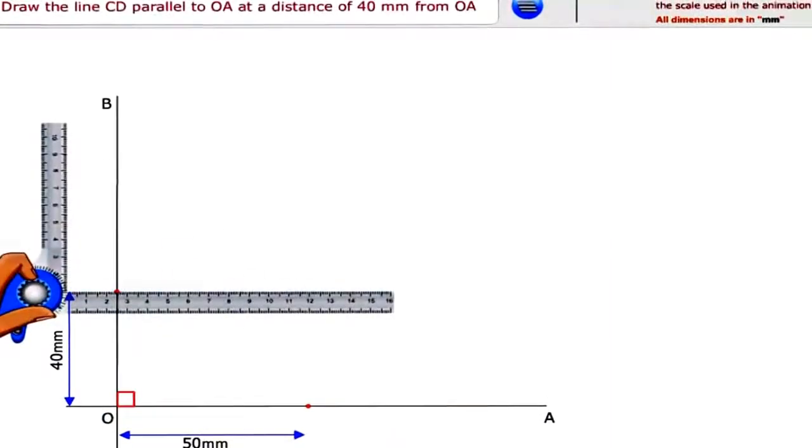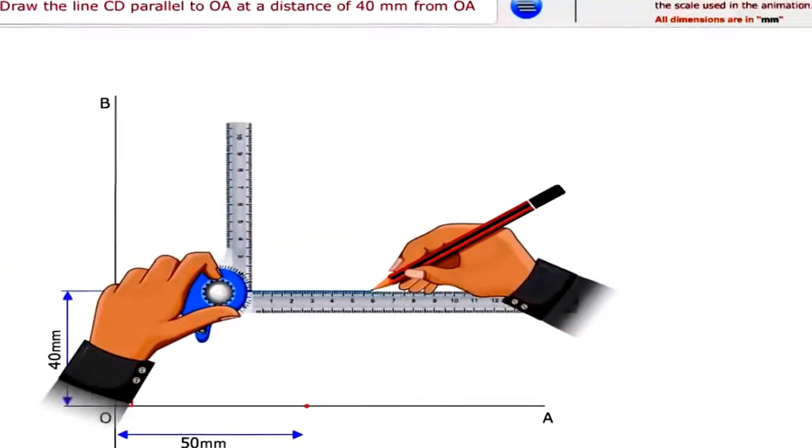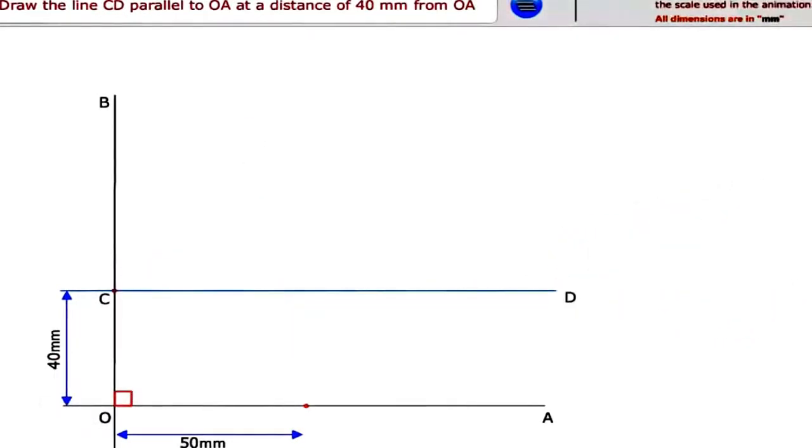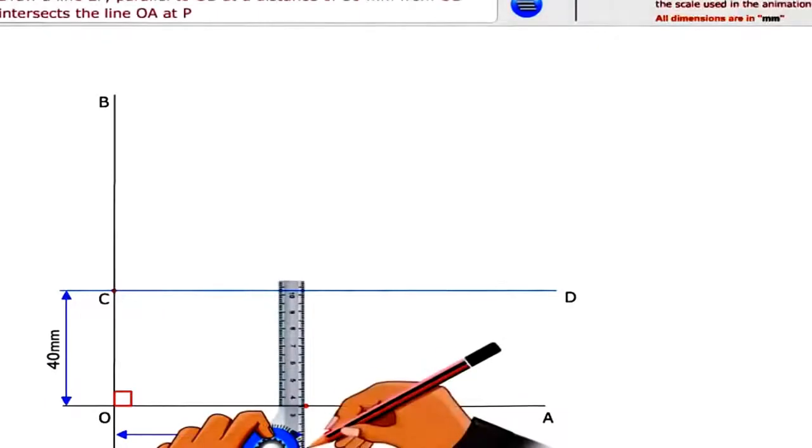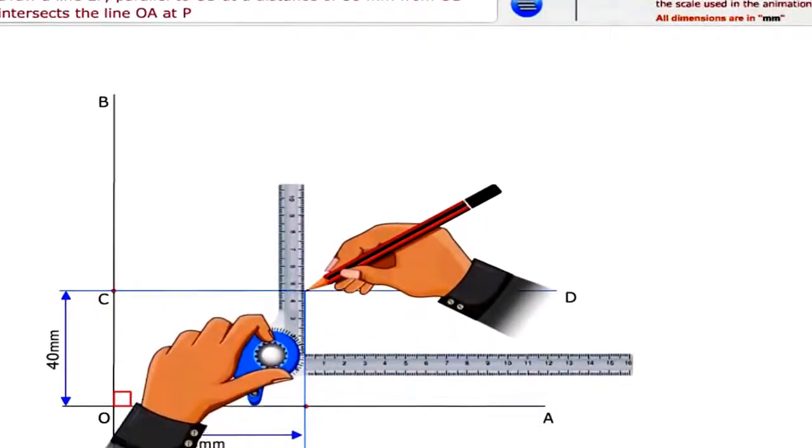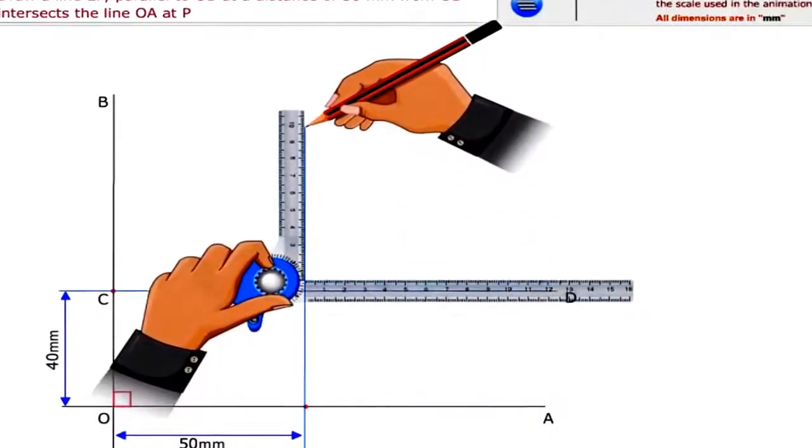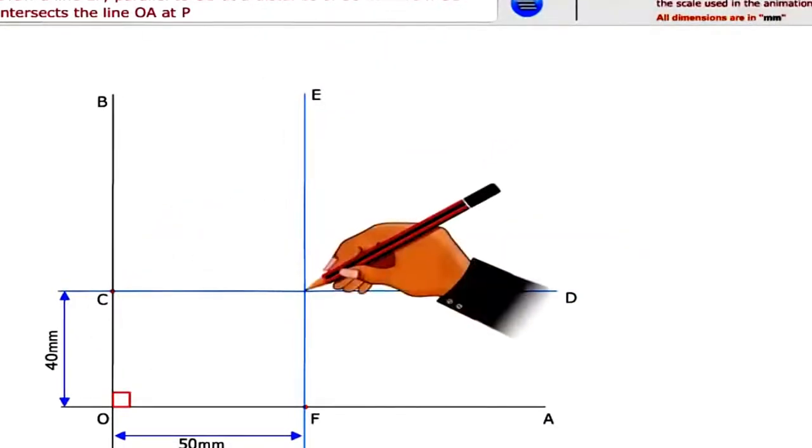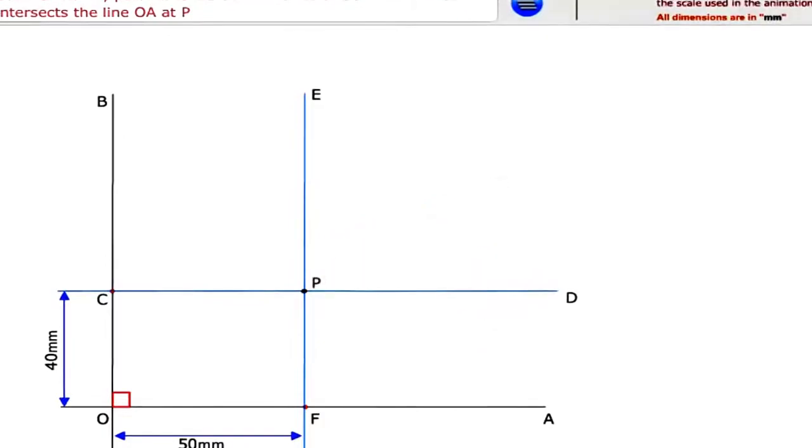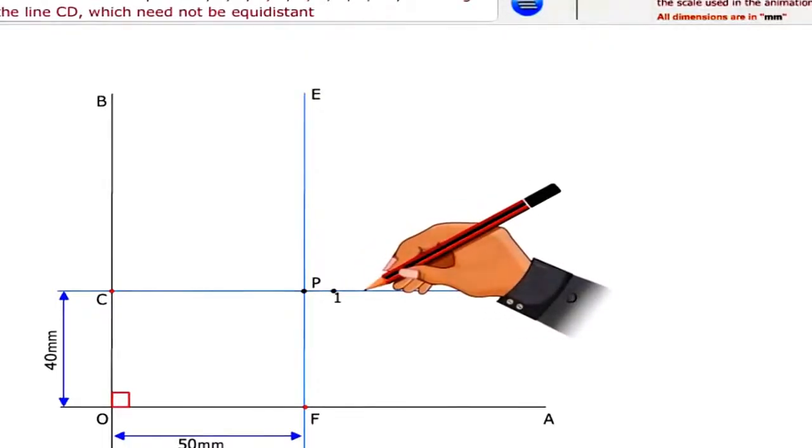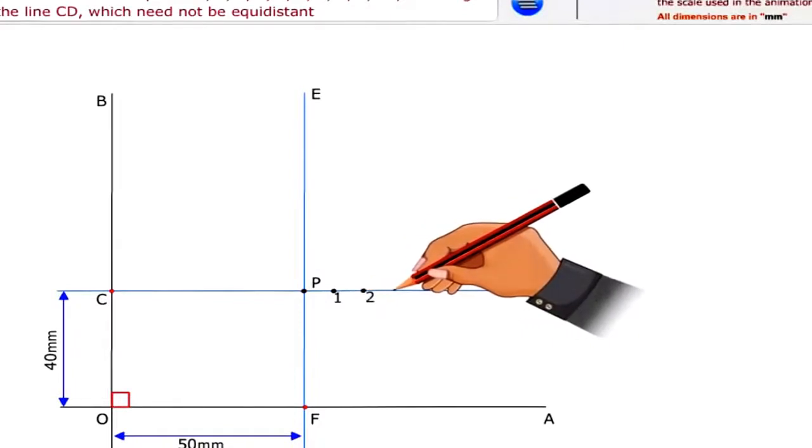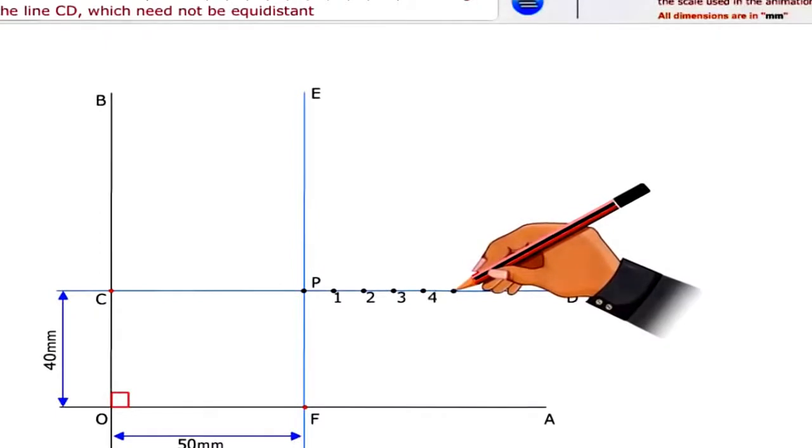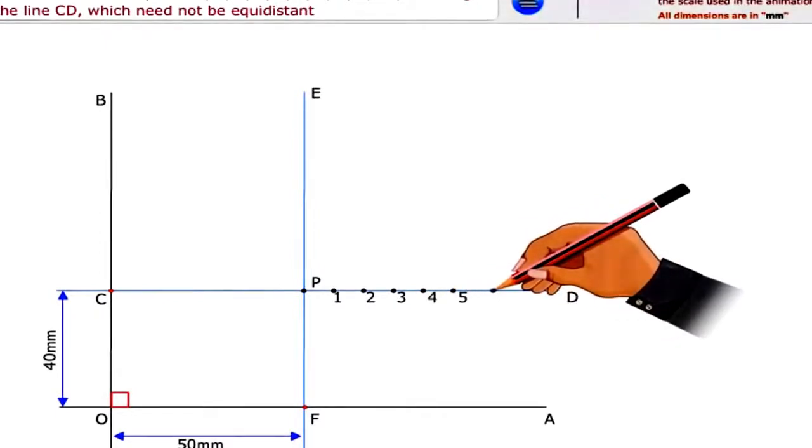Draw the line CD parallel to OA at a distance of 40mm from OA. Draw a line EF parallel to OB at a distance of 50mm from OB intersects the line OA at P. Locate a number of points 1, 2, 3, 4, 5, 6, 7, 8, 9, 10, 11 along the line CD which need not be equidistant.